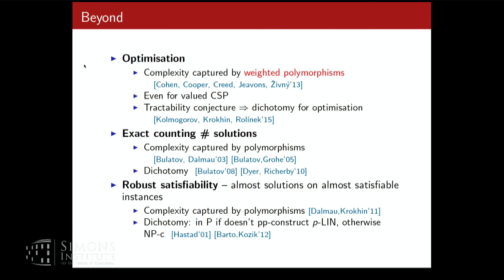Beyond CSP decision: exact optimization — finding not just a solution but maximizing satisfied constraints. A key concept invented here is weighted polymorphism: a probability distribution over operations rather than a single n-ary operation. This works in a more general setting with weighted relations, where each tuple has a rational (or infinity) weight. Kolmogorov, Krokhin, and Rolinek proved recently that if the CSP dichotomy conjecture is true, then there is an exact dichotomy for optimization as well. Using CSP as a black box plus linear programming solves everything. It's a whole class of optimization problems.